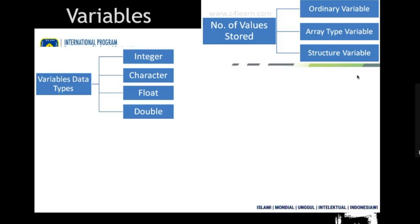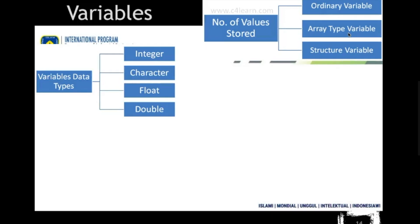An array type variable stores multiple values all of the same type. A structure type variable also stores multiple values, but those values are not all of the same type — for example, storing 1, 'a', 5, 8, 'x', where some are string type, some character, some numbers. Because these different-type values together create a structure, they are called structure type variables.